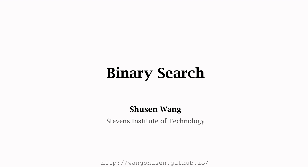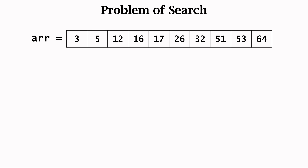In this lecture, we study binary search. It is for finding an element in a sorted array. We have an array with n elements. The elements are in ascending order. In this example, there are 10 integers. The red numbers in the bottom right corner are the indices. We count from 0.